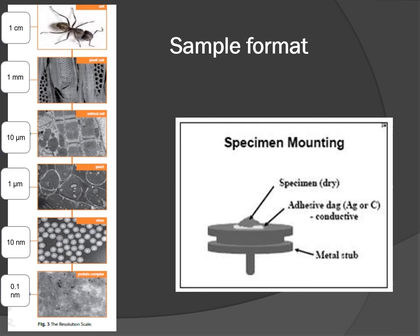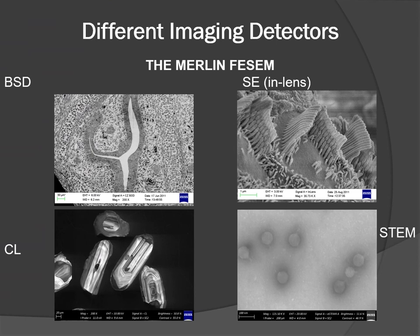Different imaging detectors available in our Merlin FIB-SEM include an in-lens secondary detector, a BASCA detector, a CL detector, and a STEM detector.